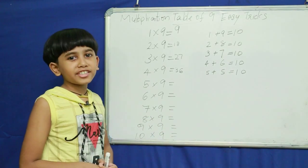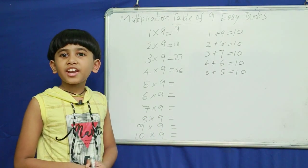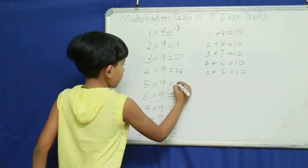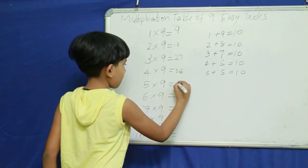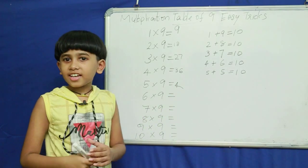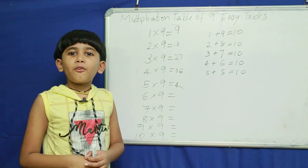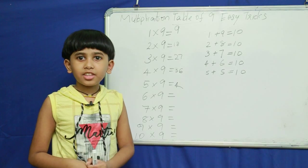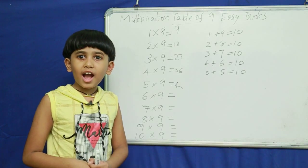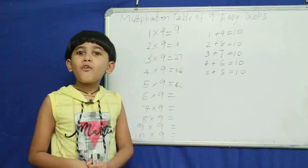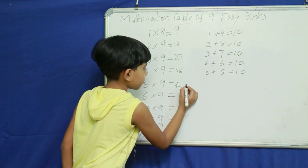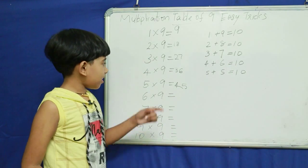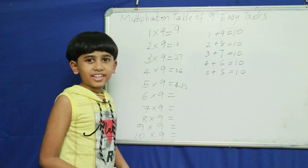Next, predecessor of 5 — how? Four. What do you add to 5 to get 10? 5. So we get 45.